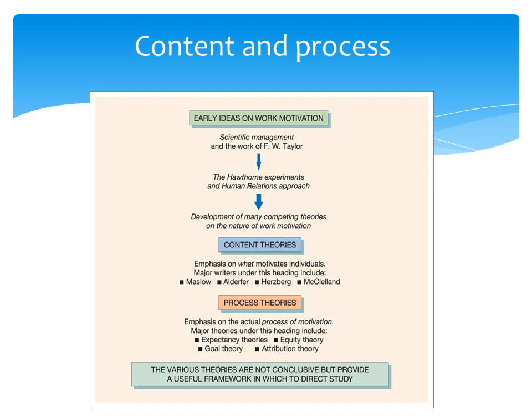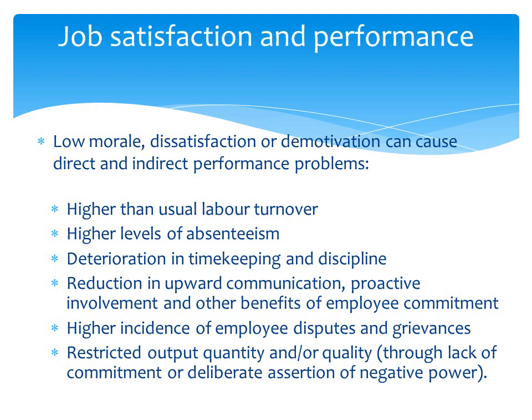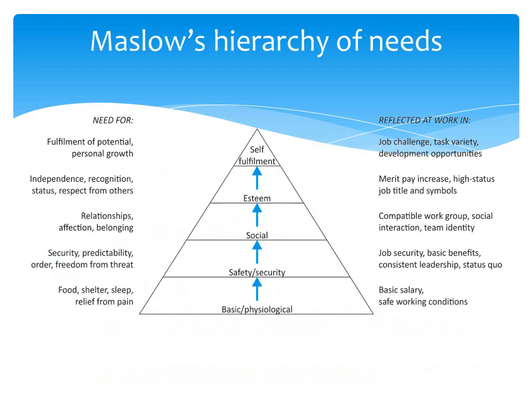Early theories came from scientific management — Taylor — and thought experiments. These can be split into content theories, such as Maslow and Herzberg, which focus on what motivates people, and process theories such as expectancy theory, equity theory, and goal theory, which focus on the process of motivation. The various theories are not conclusive but provide a useful framework. Job satisfaction is slightly different from motivation, but low morale, dissatisfaction, or demotivation can impact performance through absenteeism, poor timekeeping, and bad communication.